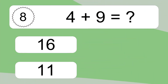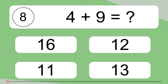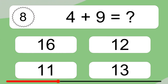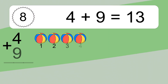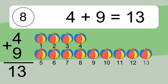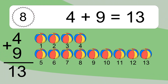Four plus nine equals what? Four plus nine equals thirteen. Let's count it: one, two, three, four, five, six, seven, eight, nine, ten, eleven, twelve, thirteen.